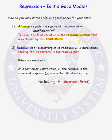The second thing that you must look at is a residual plot. A residual plot is just a scatter plot of the residuals versus the x data values. What do you want the residual plot to look like when you have a good linear model? You do not want to see any pattern in your residual plot.